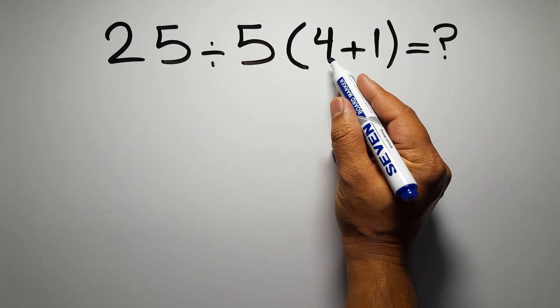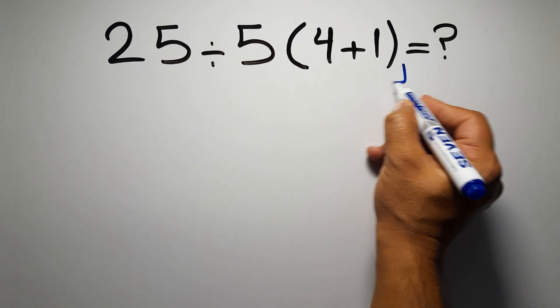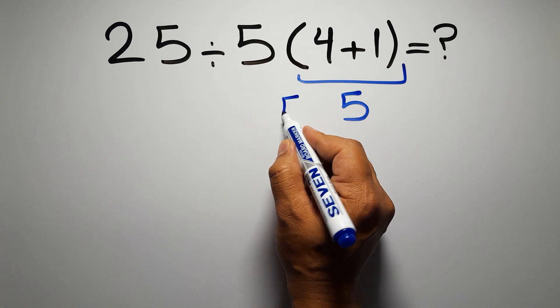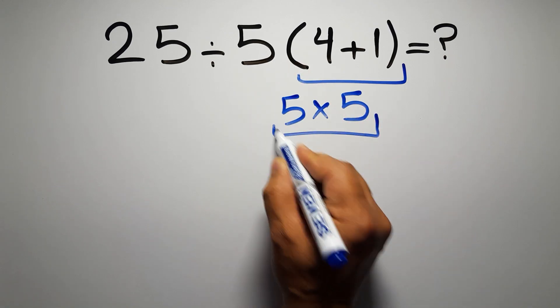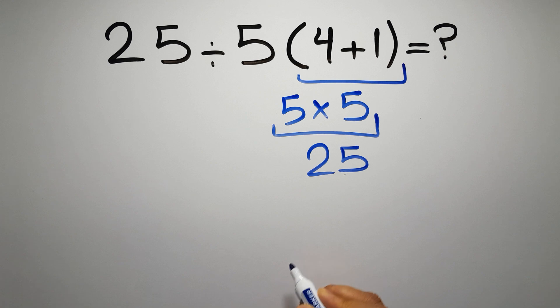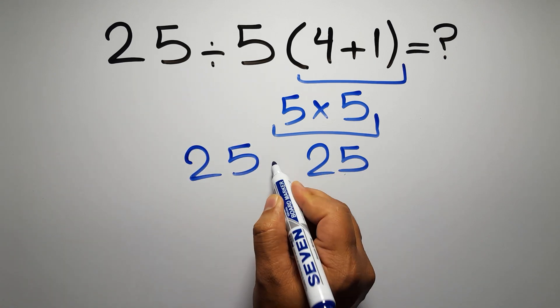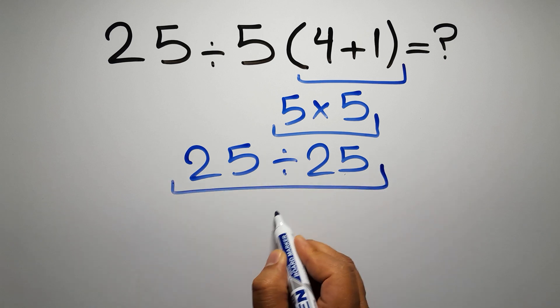Inside these parentheses we have 4 plus 1, which gives us 5, and 5 times 5 equals 25, so 25 divided by 25 is just 1. But this answer is not correct because according to the order of operations...